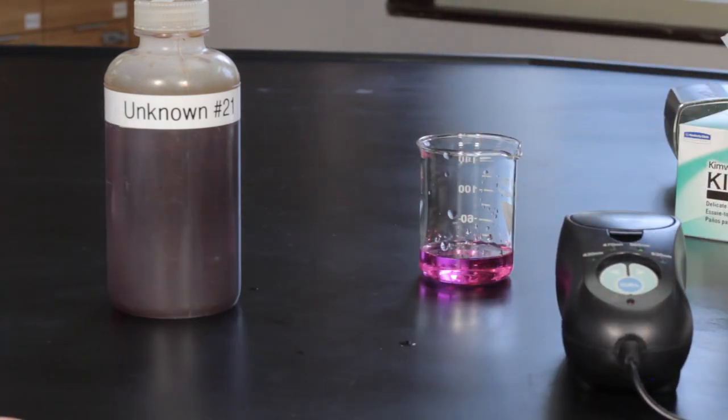Remove the cuvette from the cell wall and rinse both cuvettes thoroughly with distilled water. Switch the colorimeter wavelength selector button to the off position. Clean the glassware and put away the equipment.